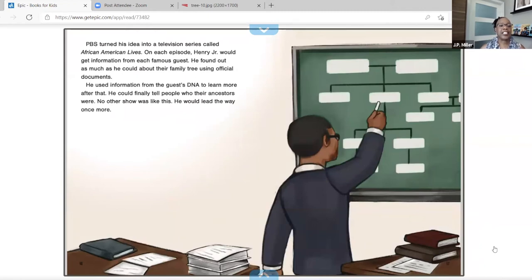PBS turned his idea into a television series called African American Lives. On each episode, Henry, Jr. would get information from each famous guest. He found out as much as he could about their family tree using official documents. He used information from the guest's DNA to learn more after that. He could finally tell the people who their ancestors were. No other show was like this. He would lead the way once more.